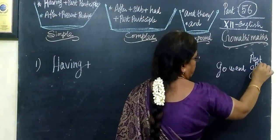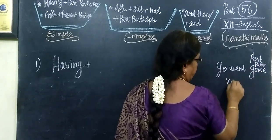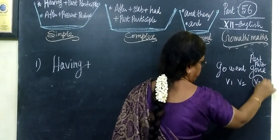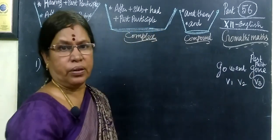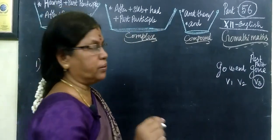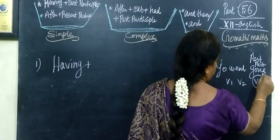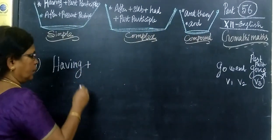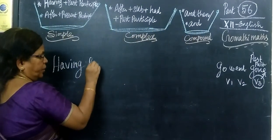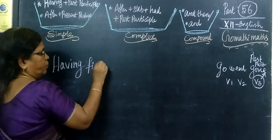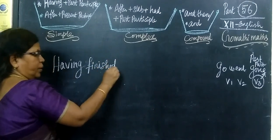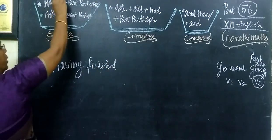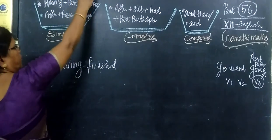This is past participle — that is V1, V2, V3. This V3 is known as past participle. So what do we say? Having finished. Hope you understand — the structure is having plus past participle.